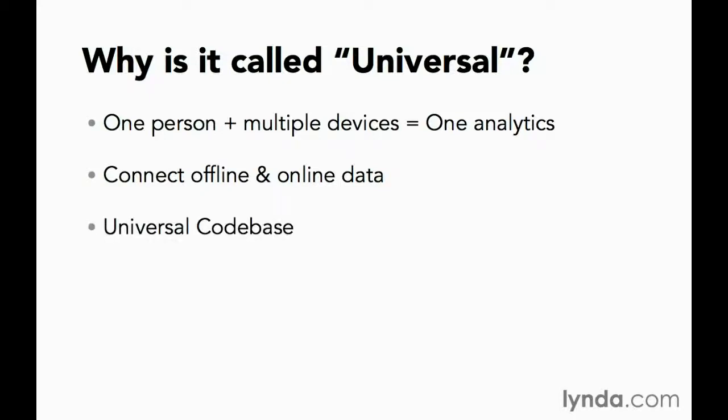Another thing that's universal is the code base. Before, we had a few different JavaScript versions that could all be considered production to some extent: the really old urchin.js, the GA.js synchronous version, the GA.js asynchronous version, and DC.js that enabled remarketing and audience reports. Now there's going to be one code base — it is analytics.js — and as of coming out of beta, it now supports remarketing and all those other functions as well. So it truly is one universal code base.